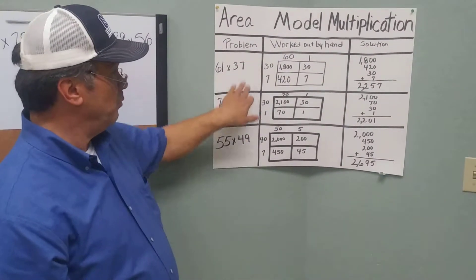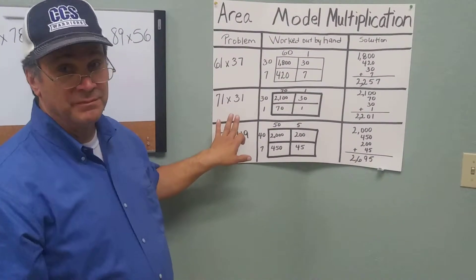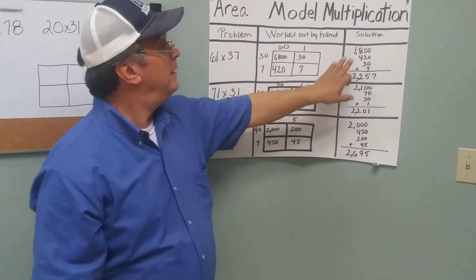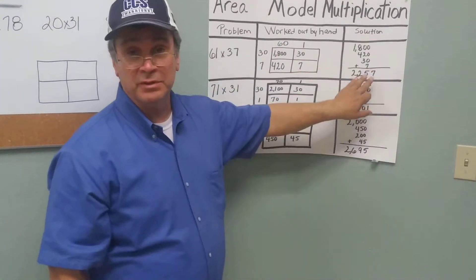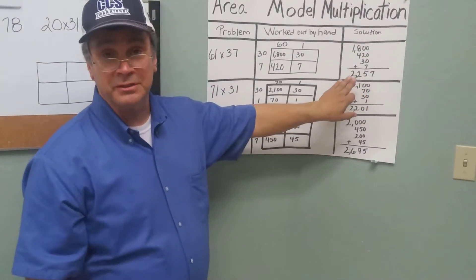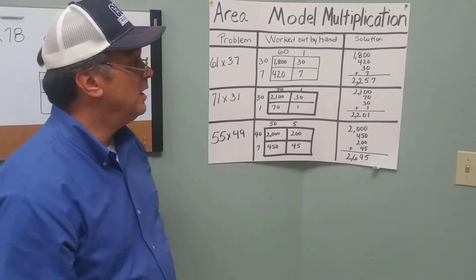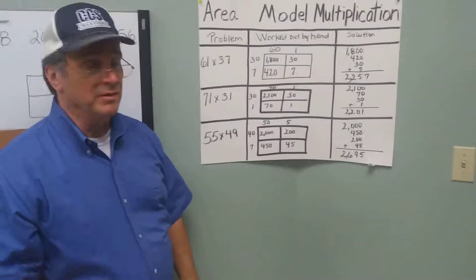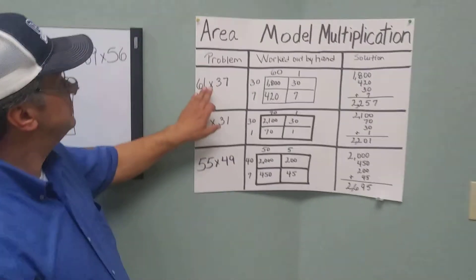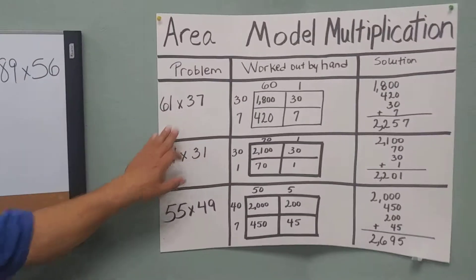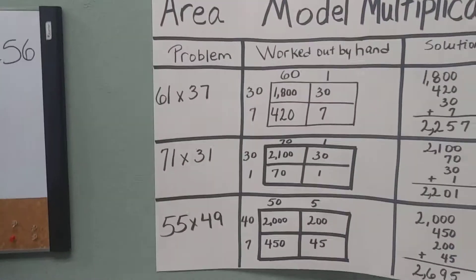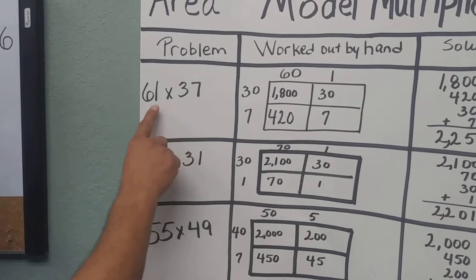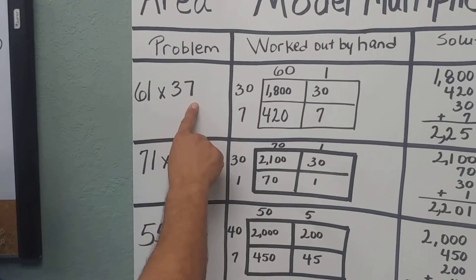One, we're going to work out the problem, and then we're going to handwrite it, and then we're going to build out our solution. Let's start with our first problem: 61 times 37.